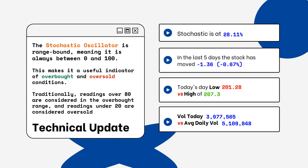This is only a technical update because you want to look for overbought and oversold conditions. Readings over 80% are considered overbought, and readings below 20% are considered oversold. You want to be aware of this when you're looking at a particular stock.